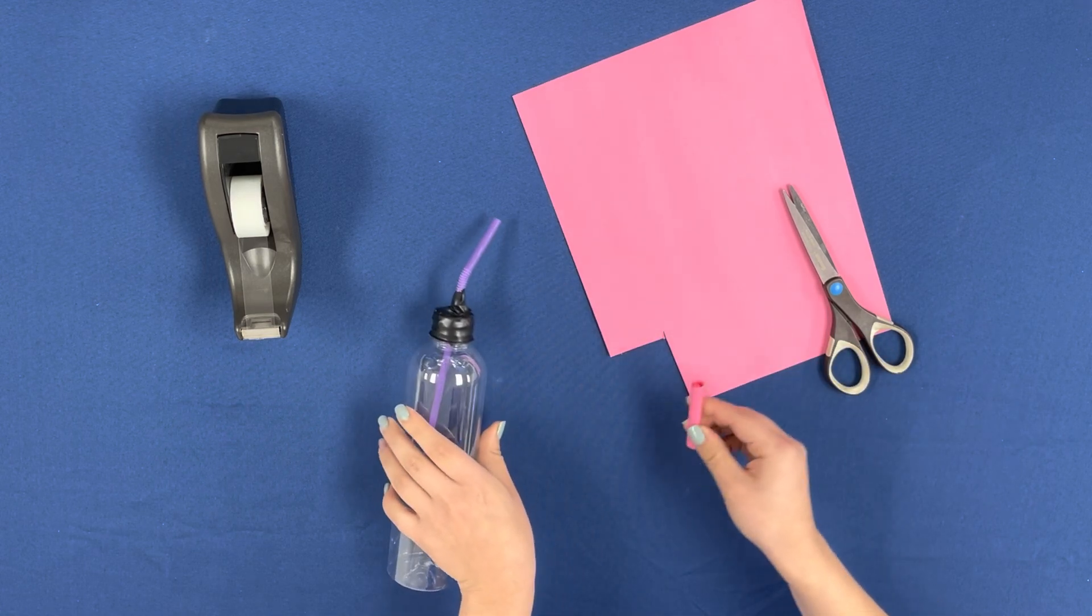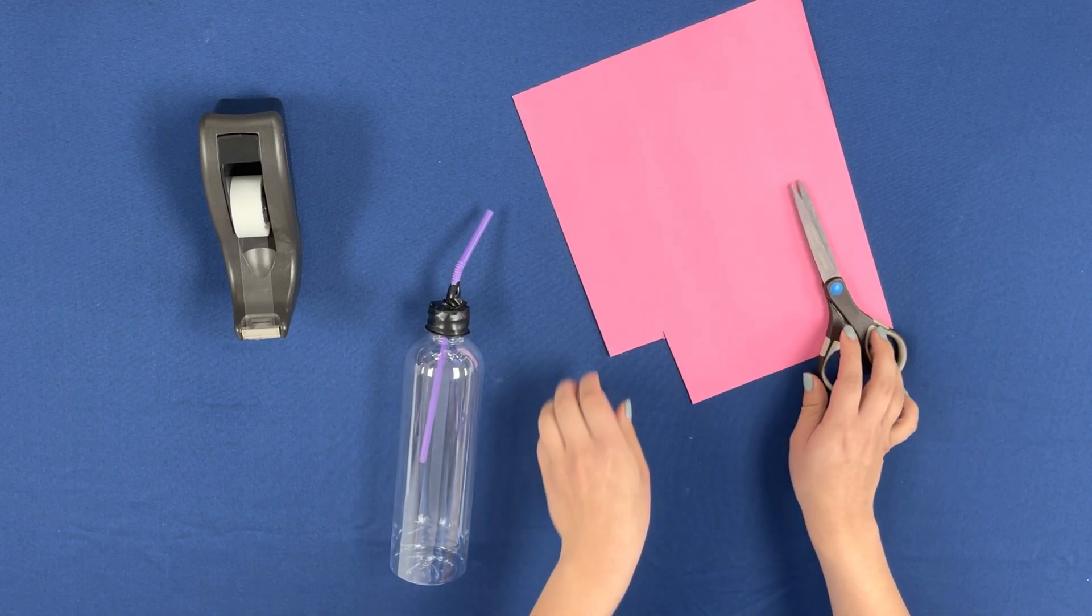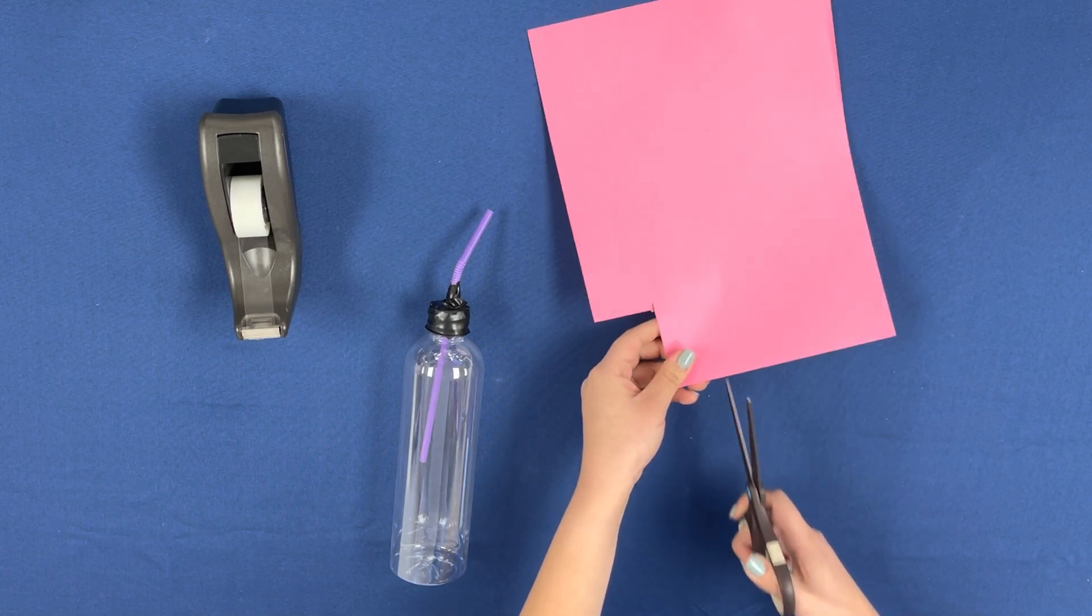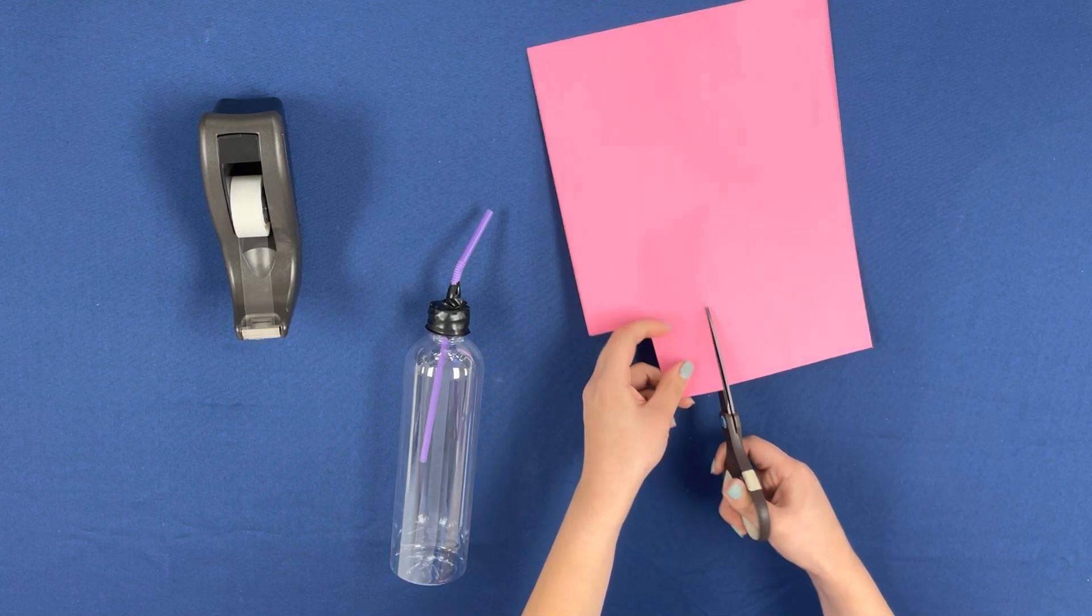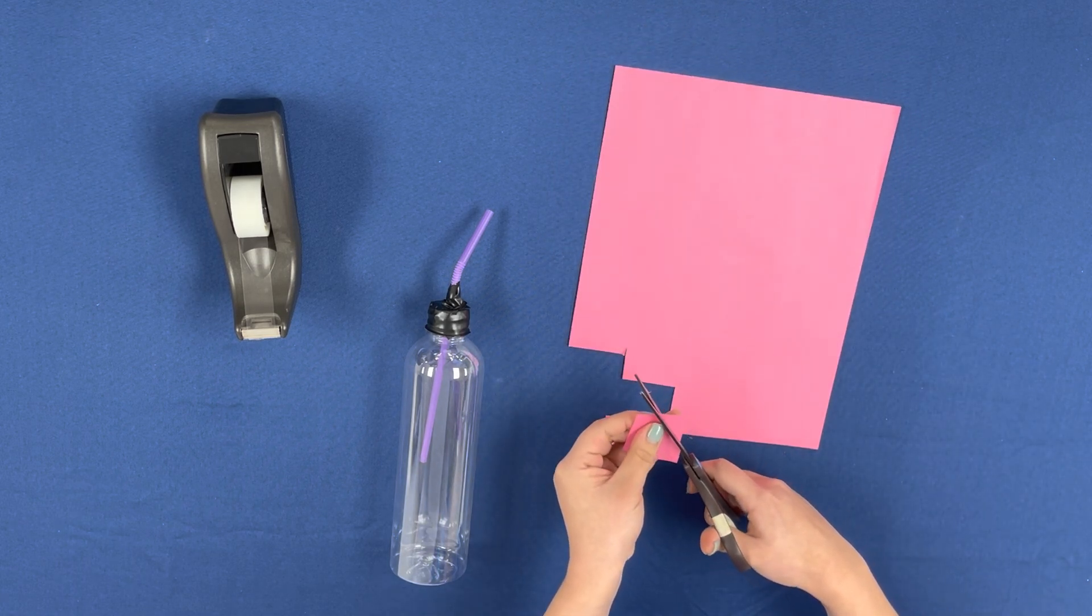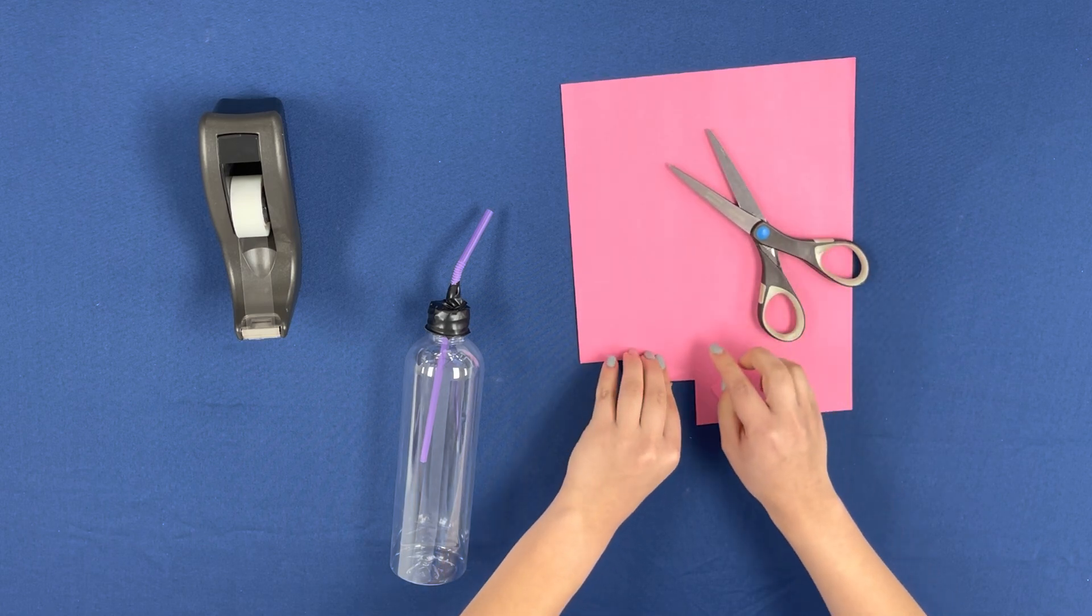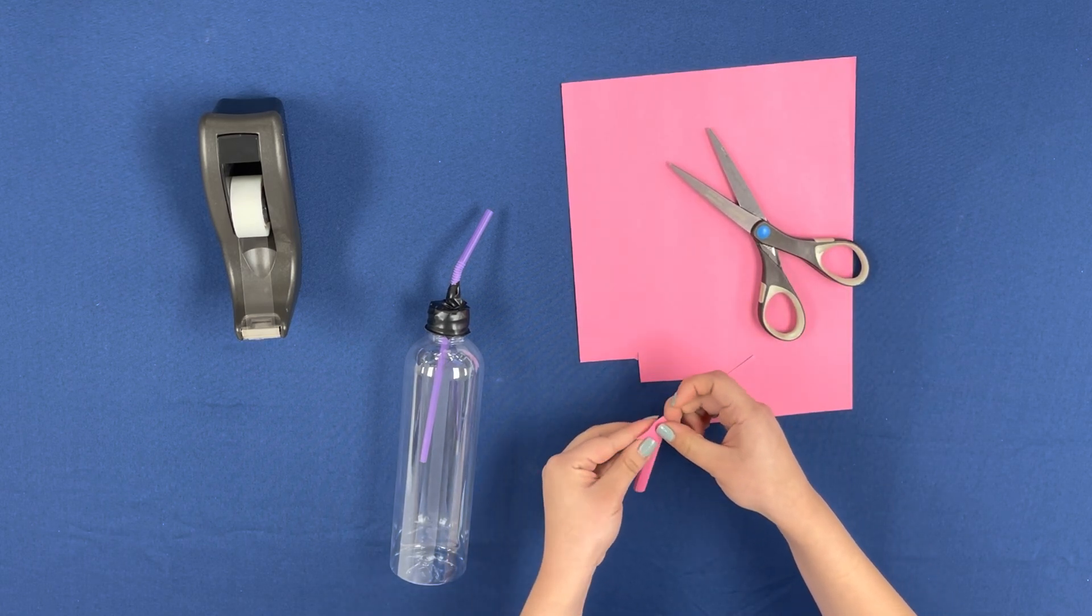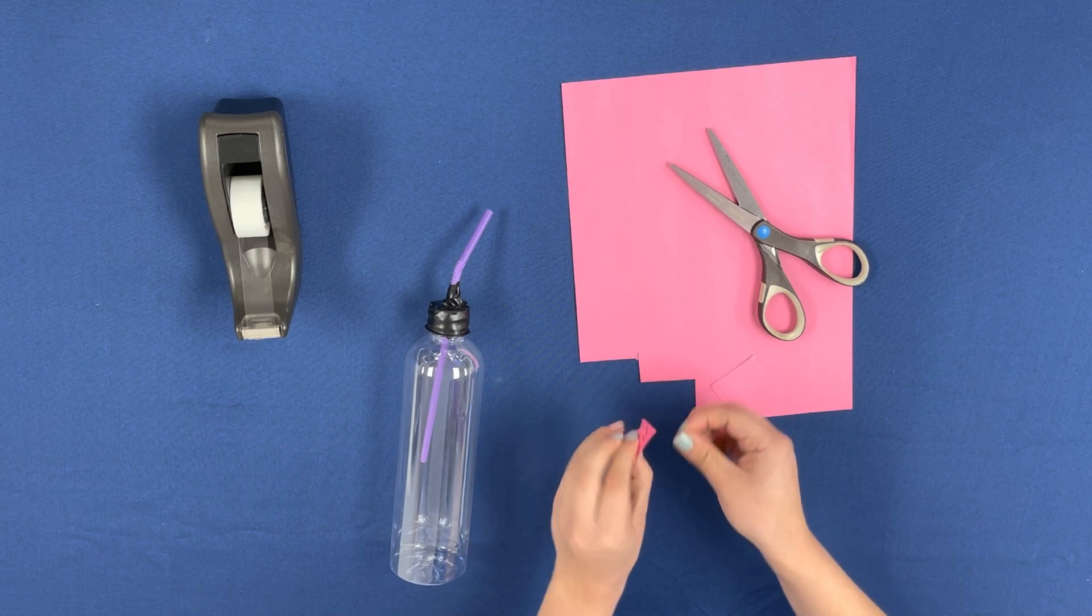Now that we have finished the body of the rocket, we are going to add the other parts to make it look a little more like a rocket. We are going to cut a triangle to add to the top of our little rocket and secure it on there with some tape.